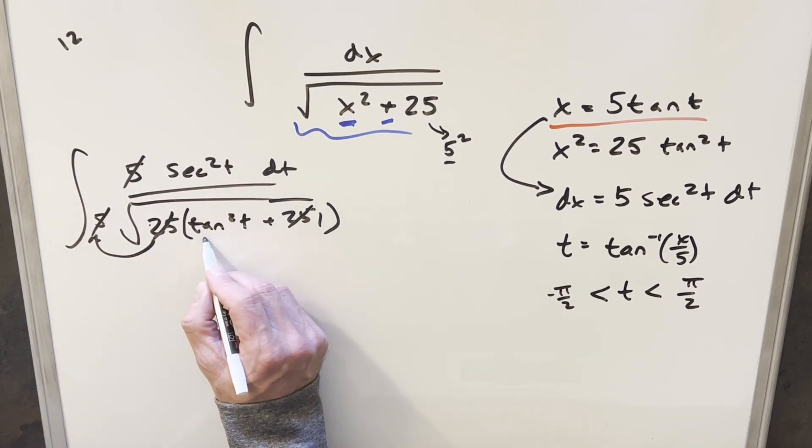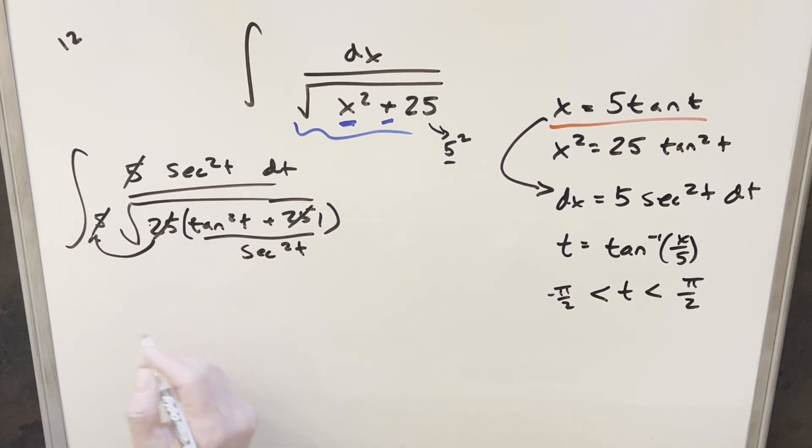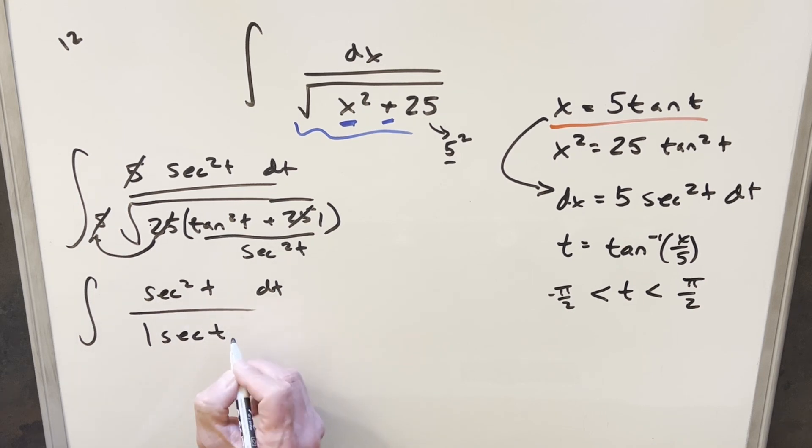And so this here is tan squared t plus 1. So this is going to become secant squared t. So let's go ahead and rewrite this. We'll have our secant squared t here in the numerator. When we take the square root of secant squared t, this is going to give me absolute value of secant of t.